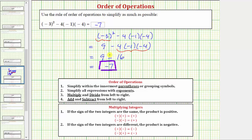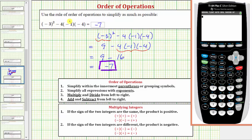Let's also verify this on the graphing calculator. To do this we enter the original expression. So we have open parenthesis negative three closed parenthesis squared. And then we have minus four times negative one times negative four. Enter. And notice how we do get negative seven verifying our work is correct.